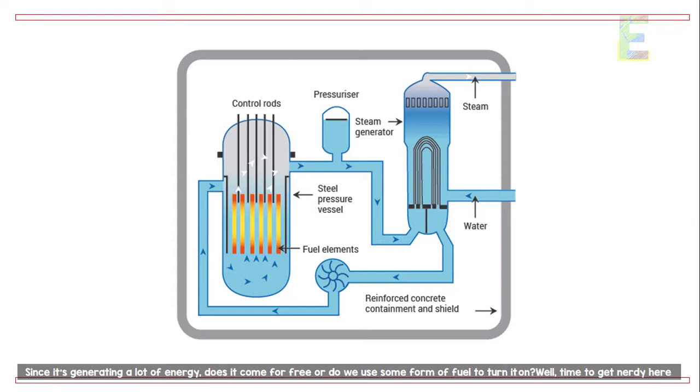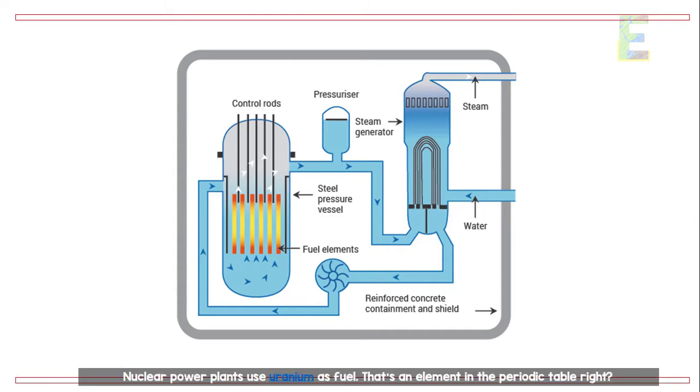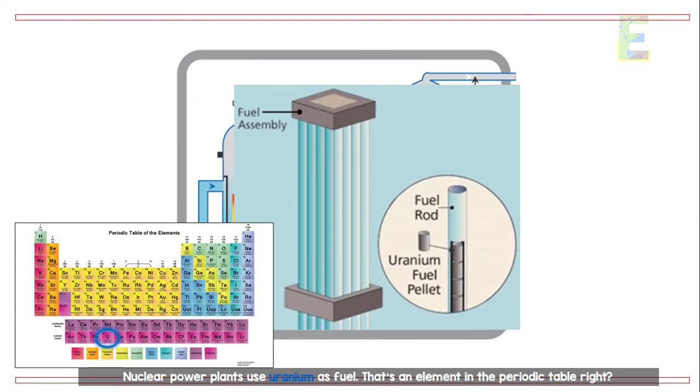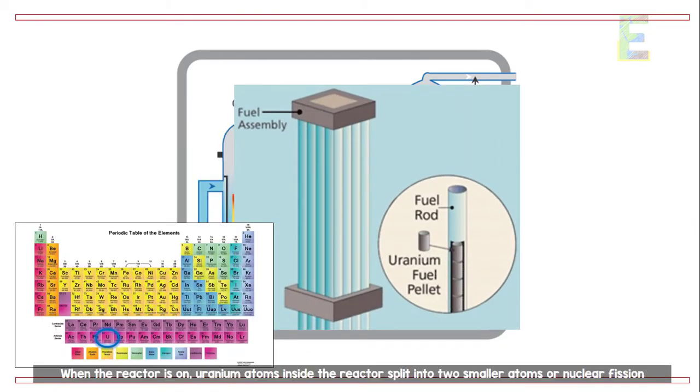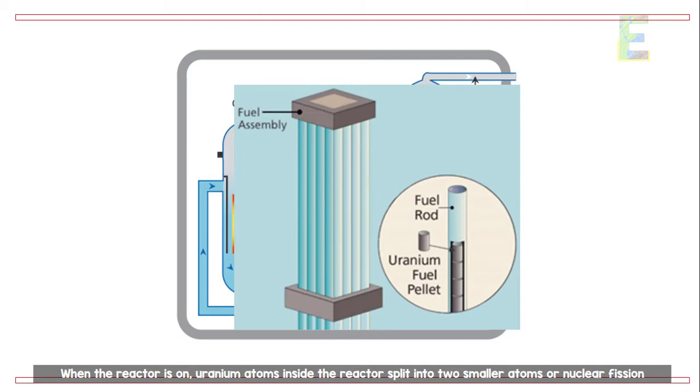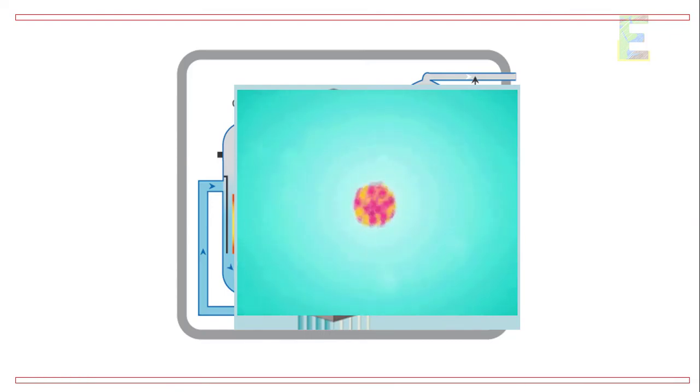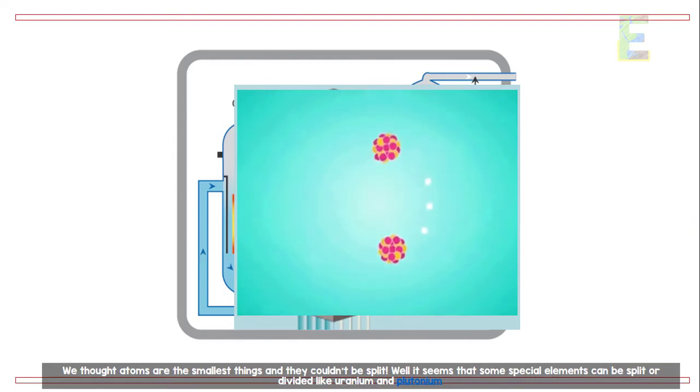Well, time to get nerdy here. Nuclear power plants use uranium as fuel—that's an element in the periodic table. When the reactor is on, uranium atoms inside the reactor split into two smaller atoms, or nuclear fission.